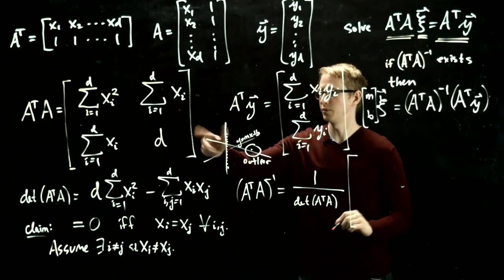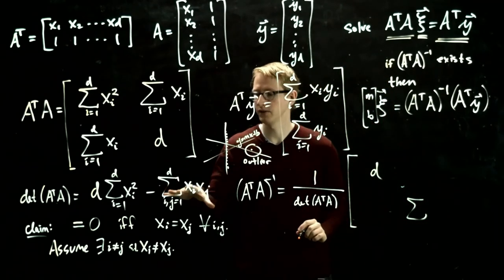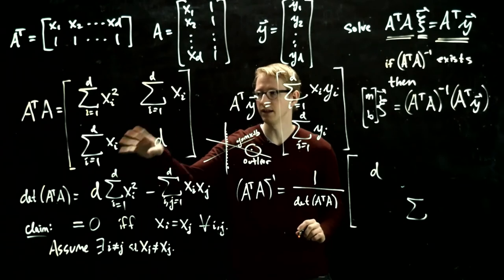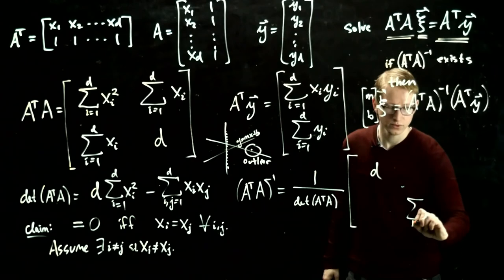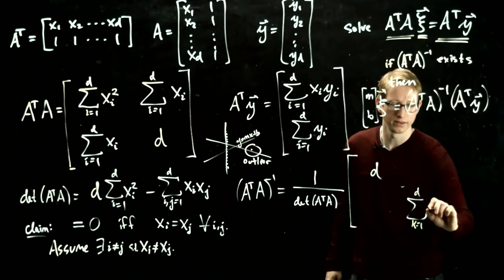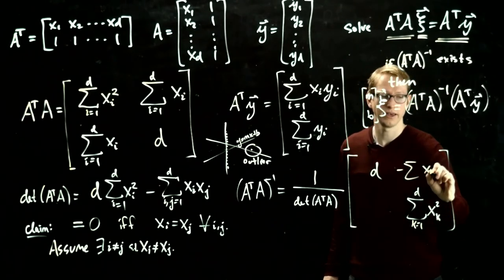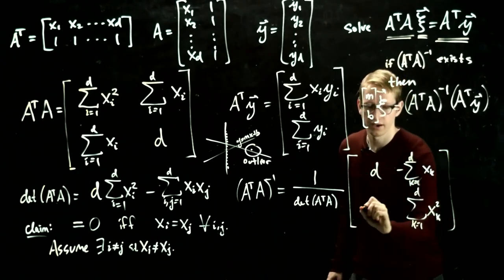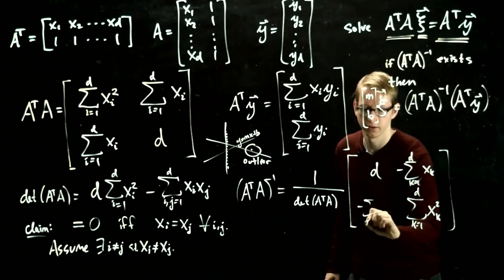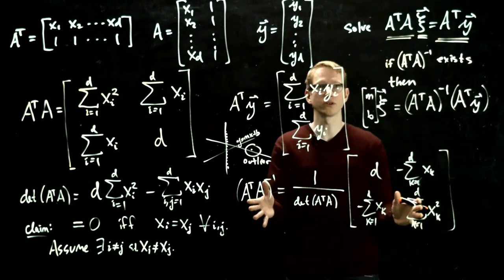And then we swap these entries. So this is d and here we have sum and there's lots of indices now and I don't want to conflate any of these indices with each other, so I'm now going to call these k or something. So this is k equals 1 to d and this is xk squared and here we have minus sum xk, k goes from 1 to d and this is minus k from 1 to d. And this here is the inverse of our matrix.